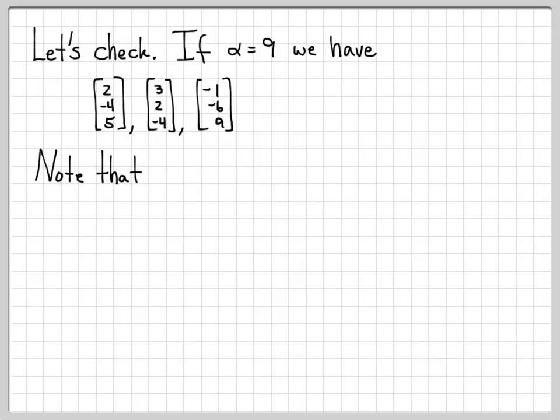It's pretty easy to see that these are definitely linearly dependent vectors, because look what I can do. If I have the final vector, [-1, -6, 9], that's a negative one there. Sorry, that should have been a negative one to start.